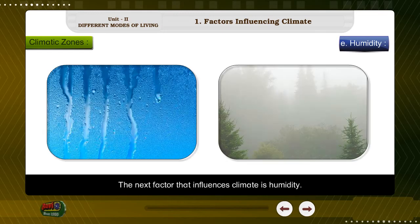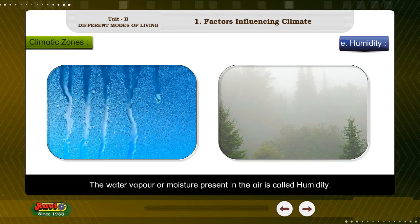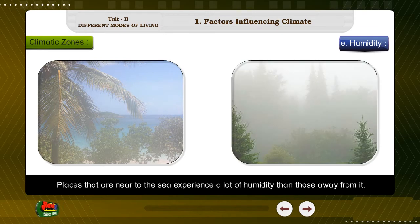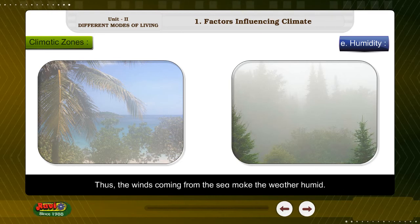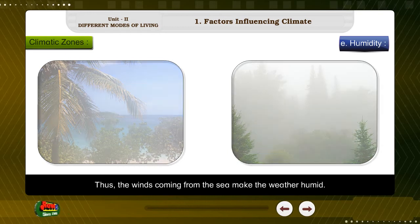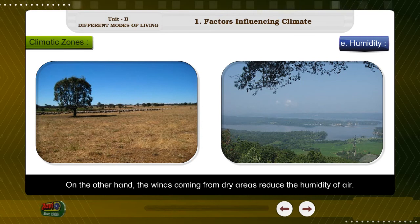Factor E: Humidity. The next factor that influences climate is humidity. The water vapor or moisture present in the air is called humidity. Places that are near to the sea experience a lot more humidity than those away from it. The winds coming from the sea make the weather humid, while the winds coming from dry areas reduce the humidity of the air.